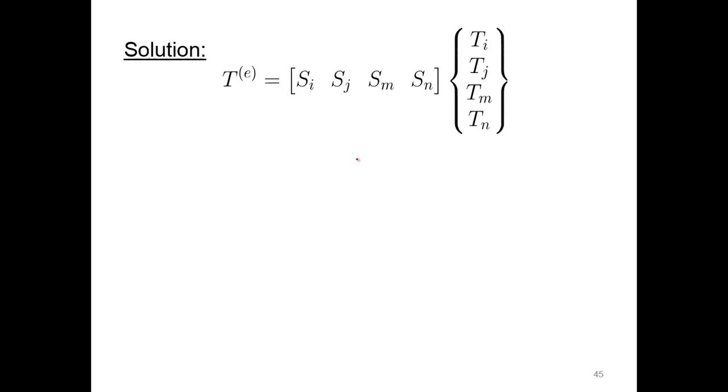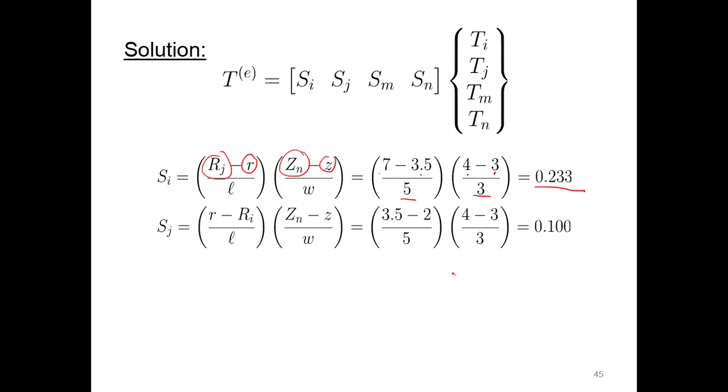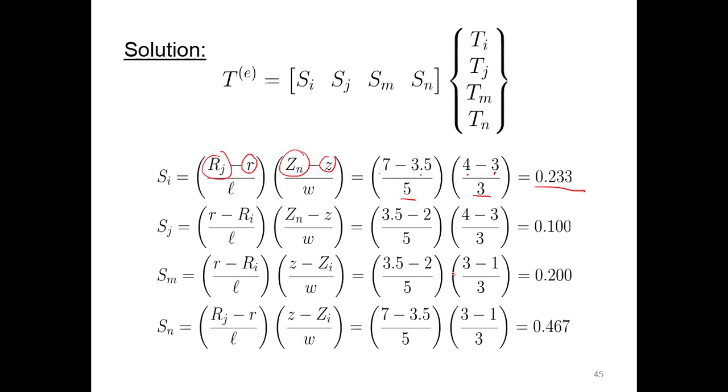Let's see how we do this. If we solve this equation, it's just a series of simultaneous equations. We need the shape function of node I. That's the global coordinate to node J minus the R coordinate of the point we want to find, times the Z coordinate to node N minus the Z location we want to find. The length along the bottom is five, the width was three. The R location is seven inches, the R we want to find is 3.5, Z location to node N is four inches, and the Z we want to find is three inches. Solving that, we get 0.233. We do the same for nodes J, M, and N.